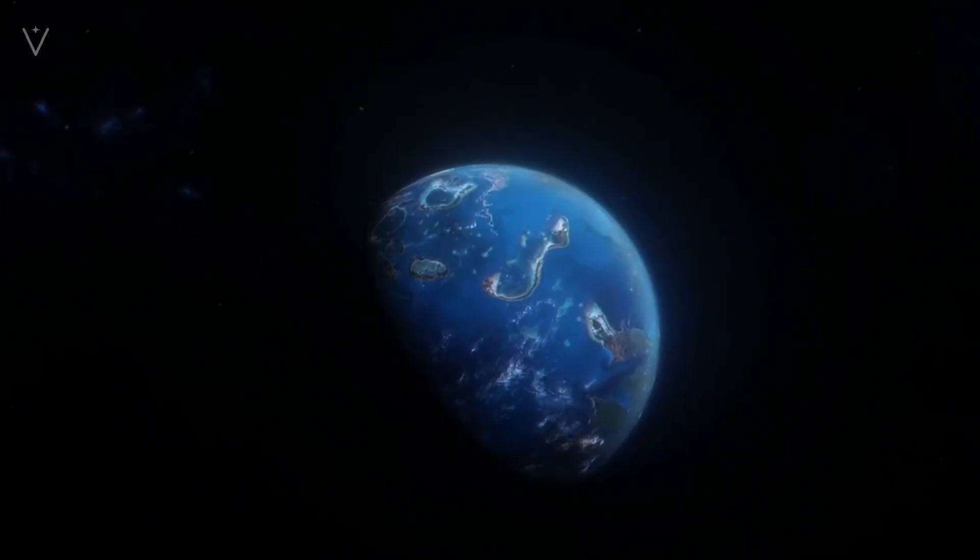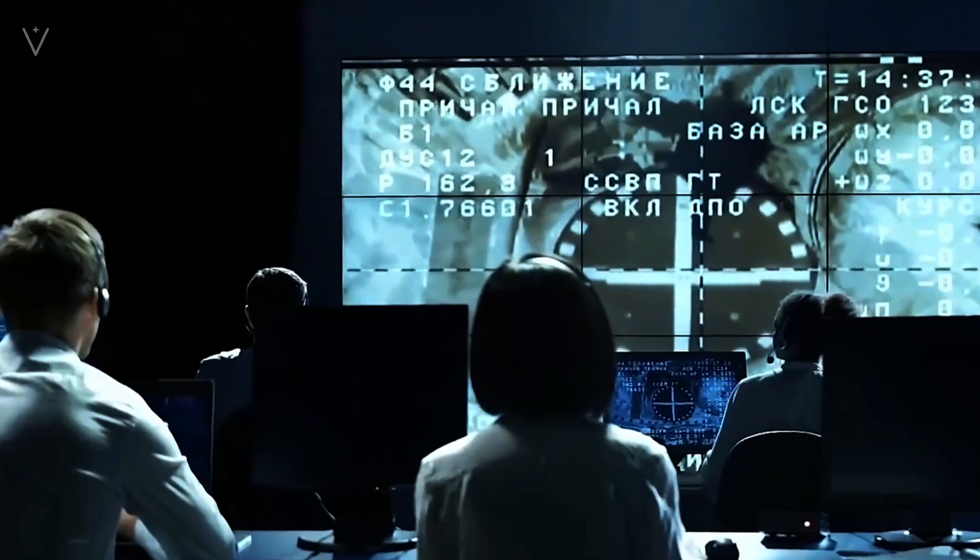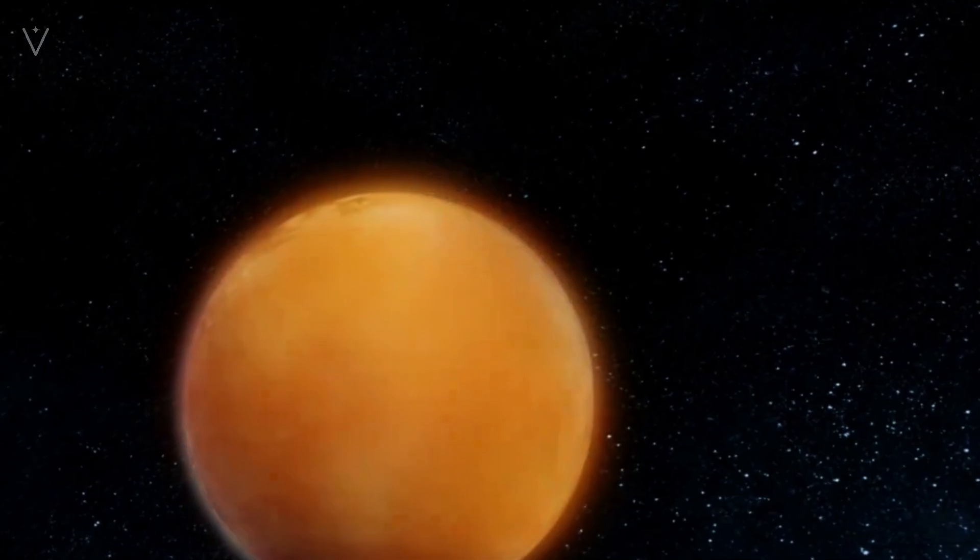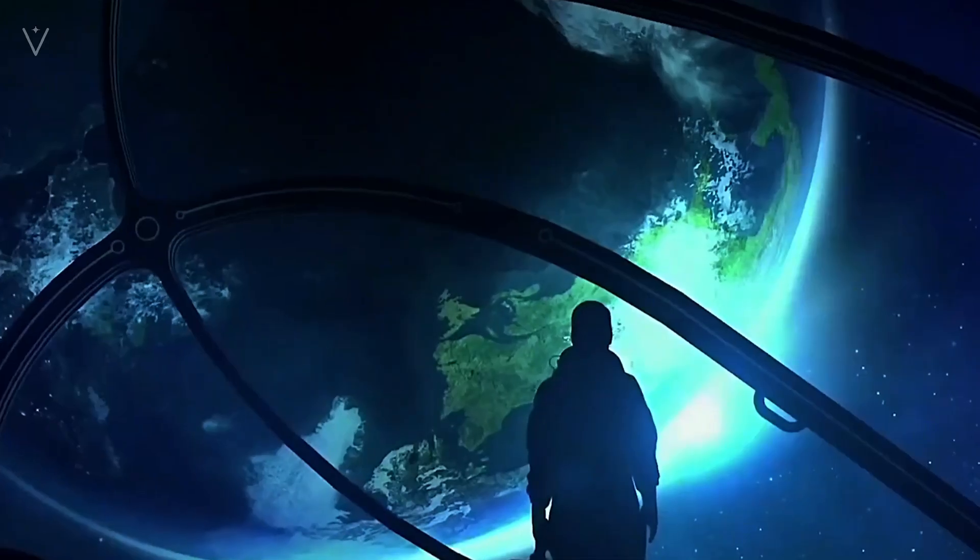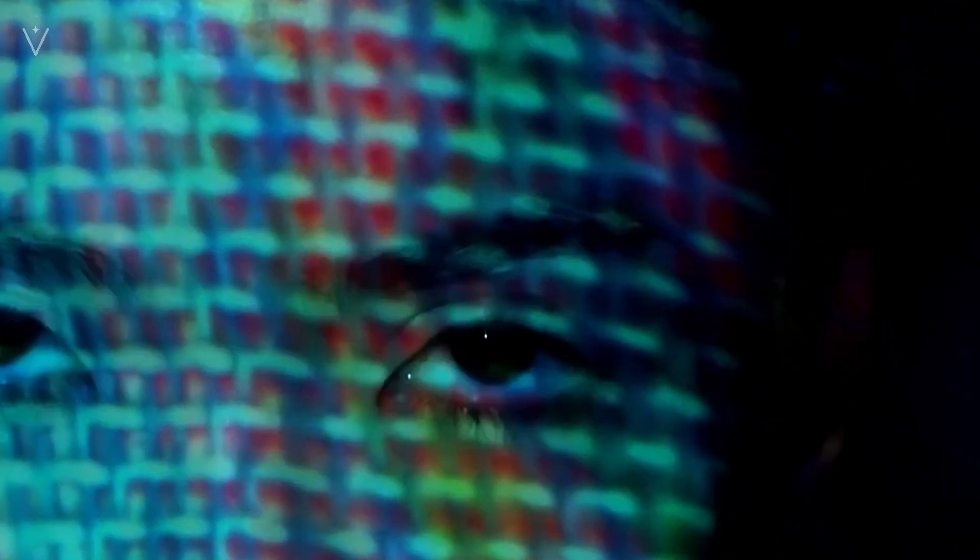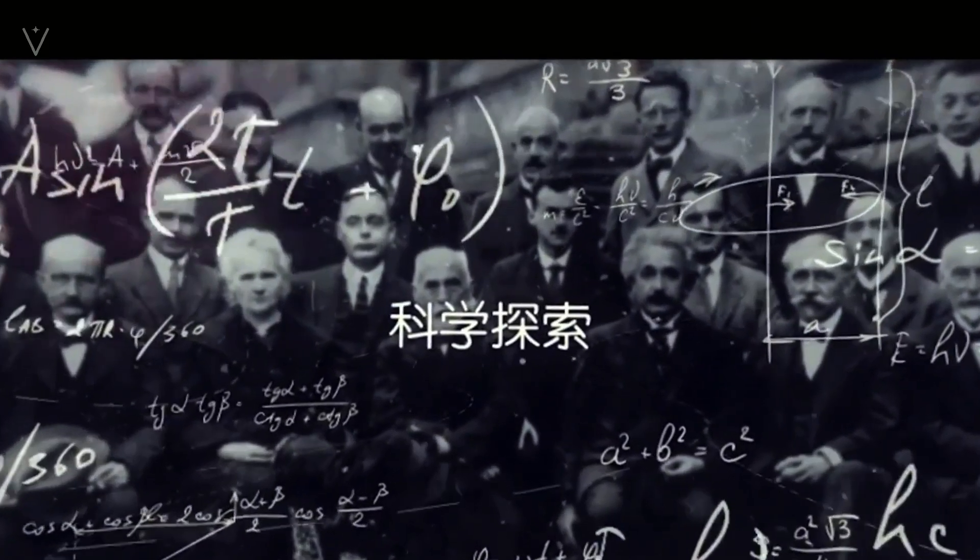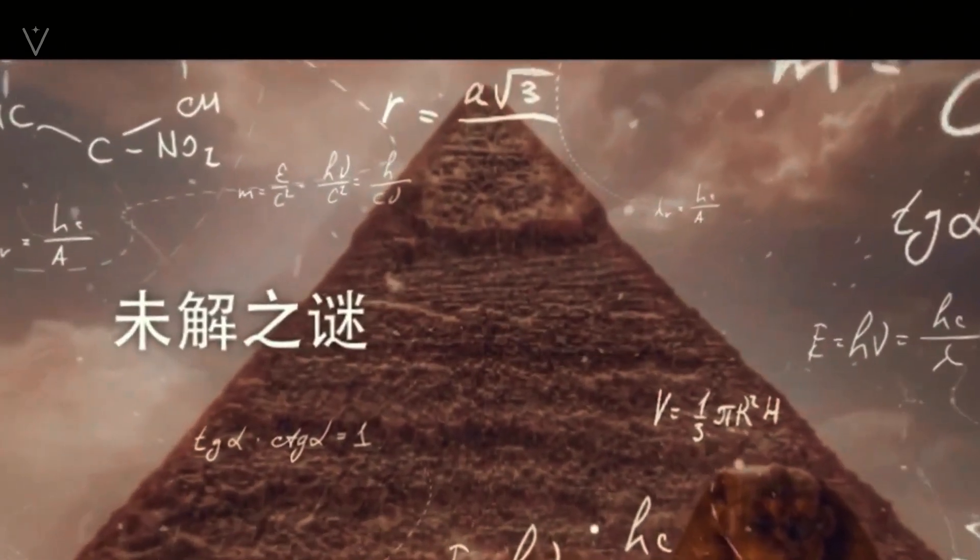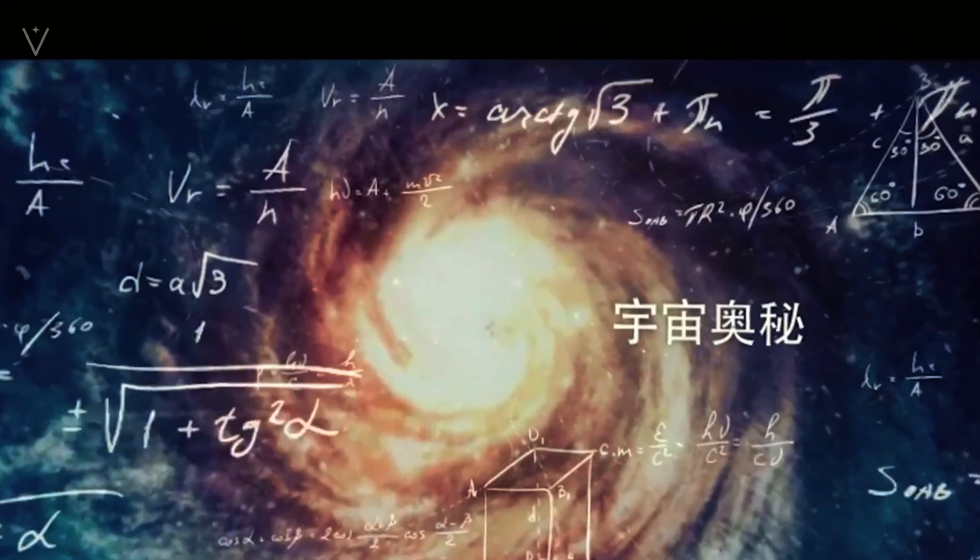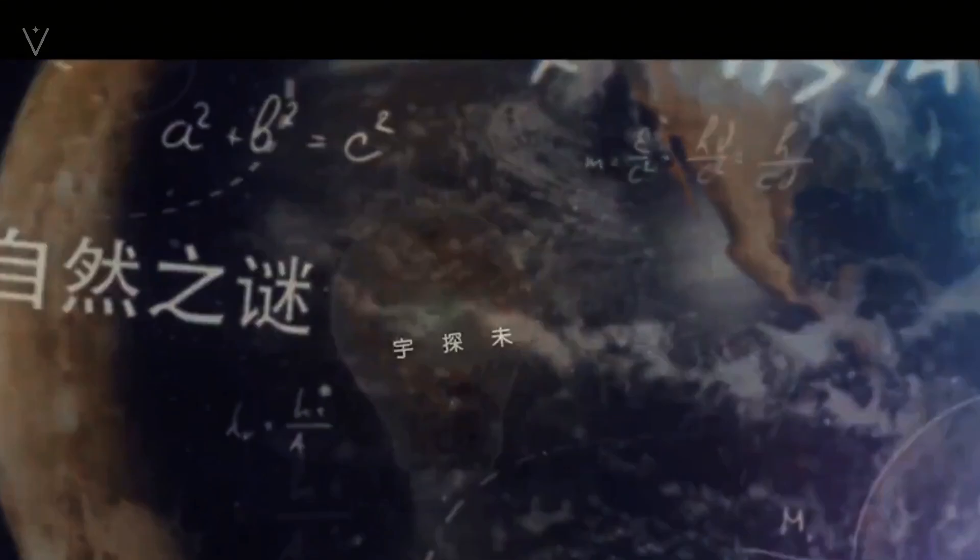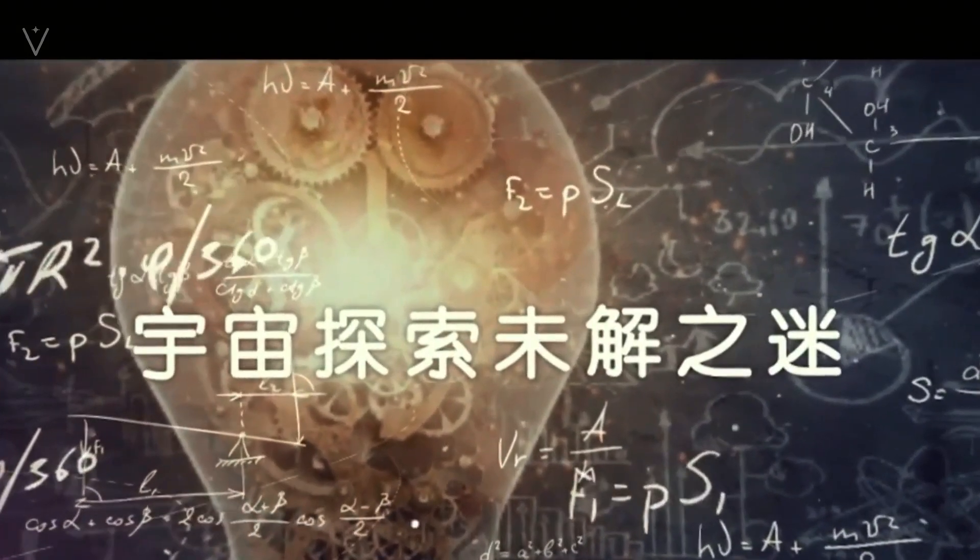Saturn has a diameter of about 120,000 kilometers. The huge rings are 540 kilometers long and 200,000 kilometers wide. The visual pressure it brings to us may become a nightmare for those with megalophobia. At the same time, it will also bring great disasters to life on Earth because Saturn's gravity is too strong. If the Earth orbits Saturn in the position of the Moon, Jupiter's huge gravity will distort the shape of the Earth, which will cause frequent volcanic eruptions and severe earthquakes and may even tear the Earth apart.